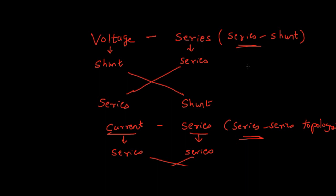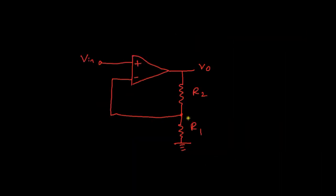Now we have understood how to rename the different topologies. Let's go to the main part: how to identify the feedback topology of an amplifier. As you all know, this is a popular amplifier circuit. It is called a non-inverting amplifier.